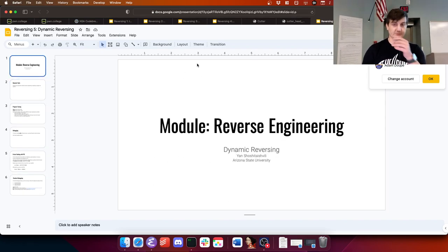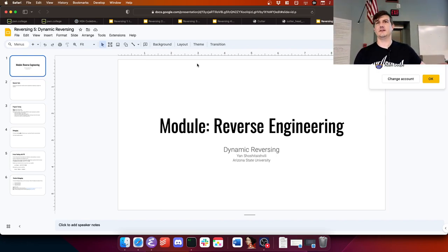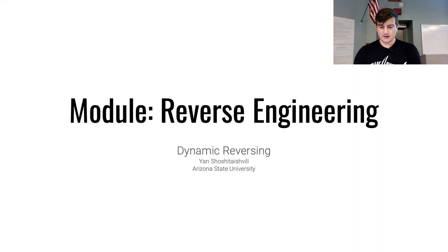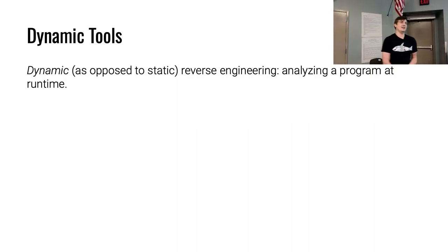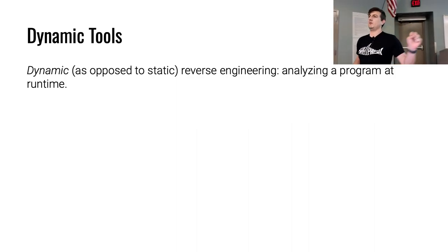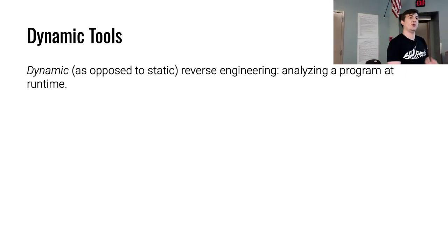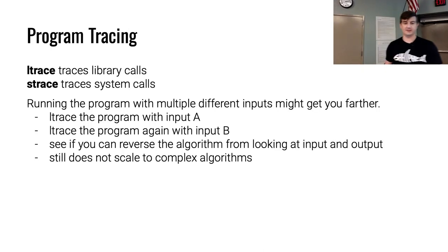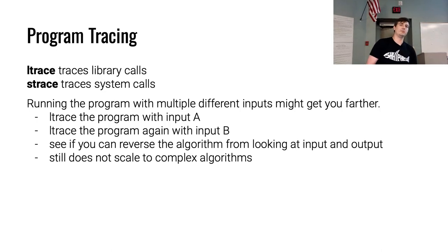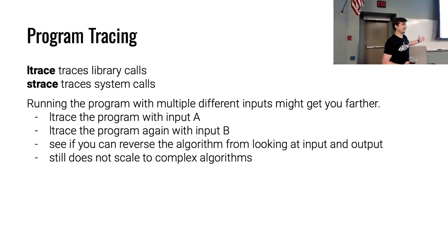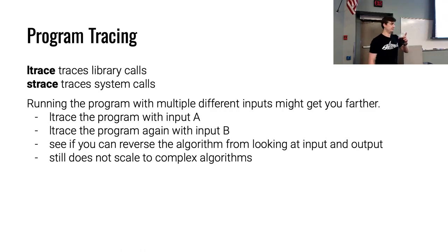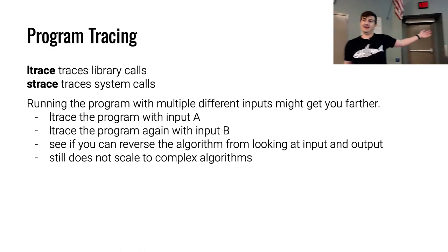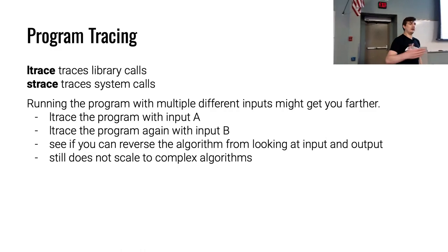Let's go through the dynamic tools quickly, then we'll do a CTF challenge together. Dynamic tools — we want to analyze the program while it's running, see what's happening, explore registers and memory. We already saw strace. What does strace do? System call trace — it shows you all the system calls a program makes. Why is that important for reverse engineering? The whole point of a system call is for a program to ask the OS to do something, to interact with the environment.